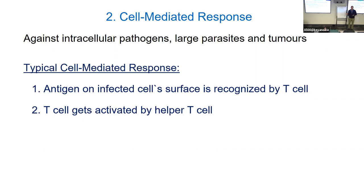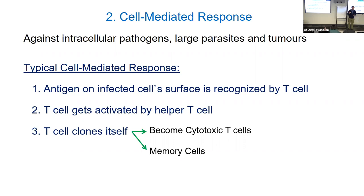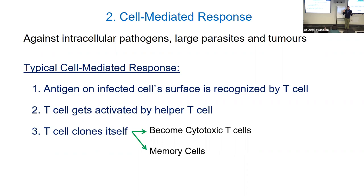When T cells get activated, some become long-lived memory cells, and some become cytotoxic — meaning cell-killing. They don't secrete antibodies; instead they do the job directly. B cells secrete antibodies that lead to killing the pathogen or destroying a toxin. T cells, when activated, become cytotoxic by injecting toxins or through the kiss of death process. There are different processes in terms of how cytotoxic cells do the job.